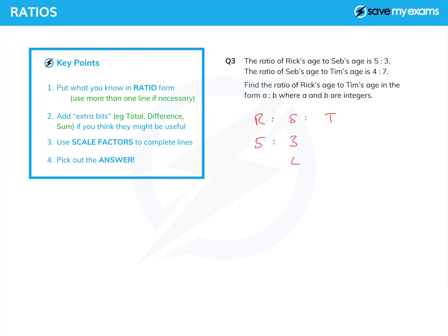We know that Rick to Seb is 5 to 3, and we know that Seb to Tim is 4 to 7. Now this is all ages down here, but I do need separate lines because they're not quite as we want them. Now I'm going to need a third line here, I think. And the one I know the most about is Seb here. And what I'm going to do is I'm going to find, as it were, the lowest common multiple of 3 and 4 and rewrite these ratios using that in the middle.